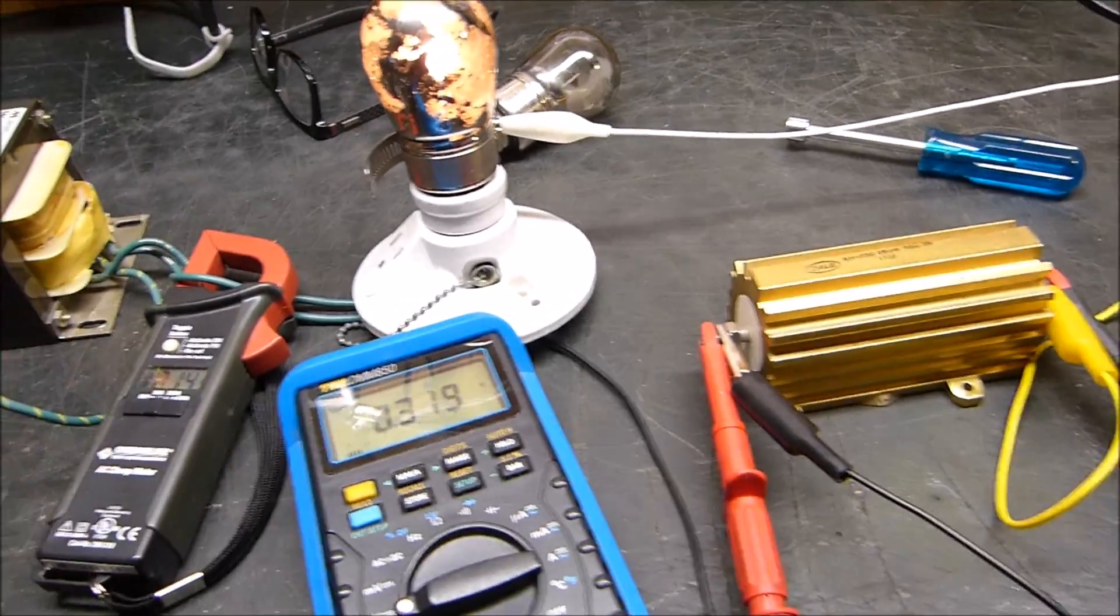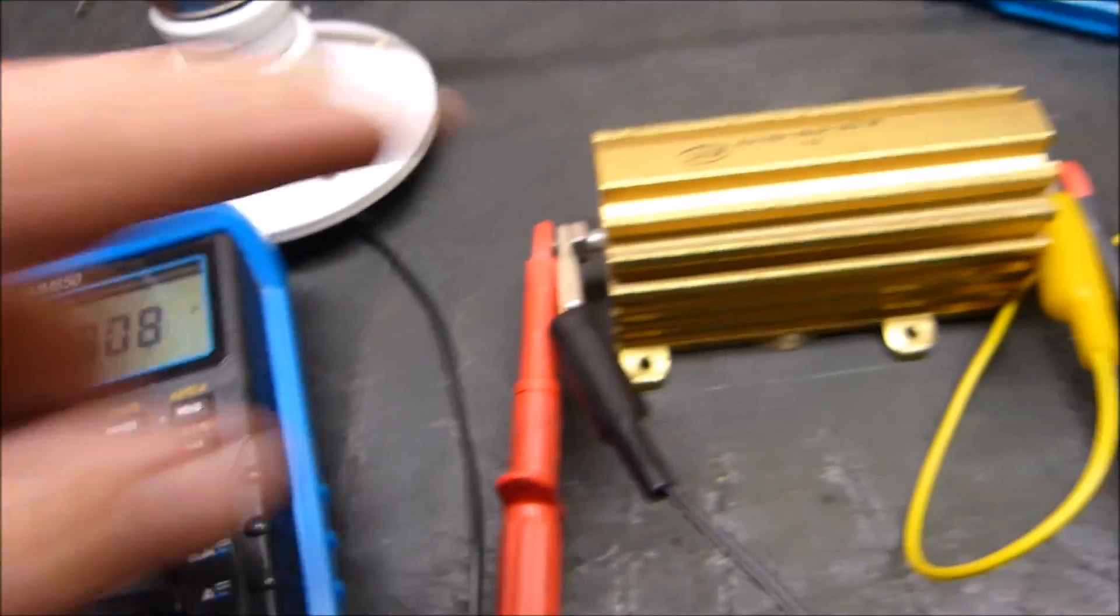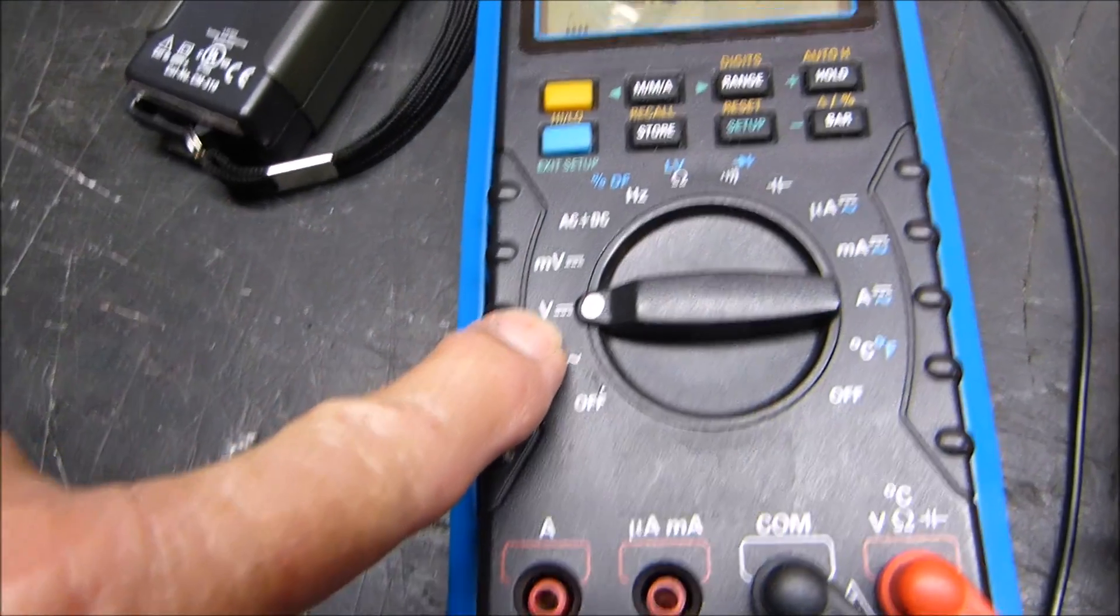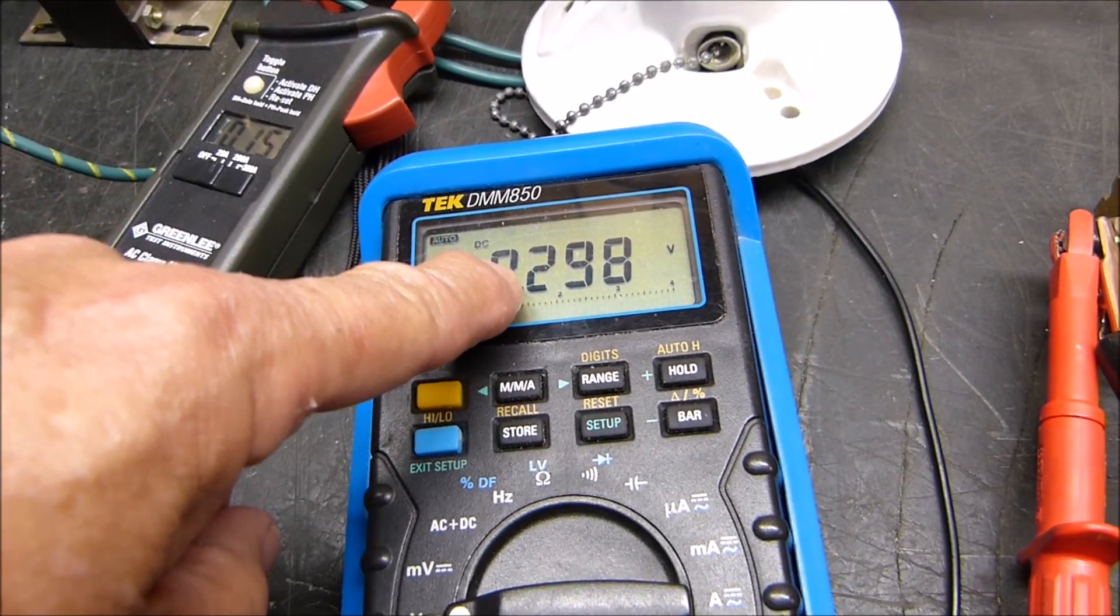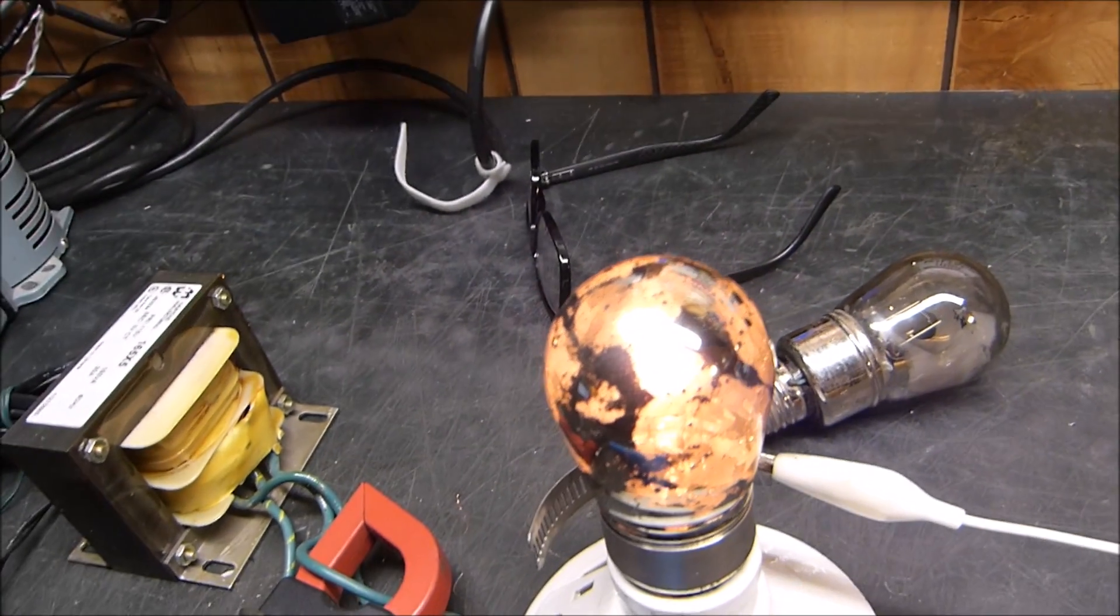I've actually got it hooked up right now but it hasn't warmed up enough yet. Here's the DC voltage that it's producing across this 30 ohm resistor. It's just basically nothing, so it appears that it's not working.